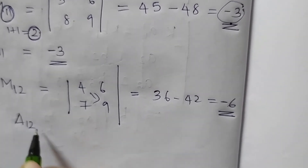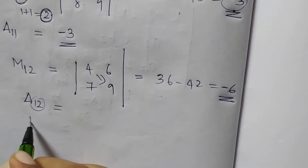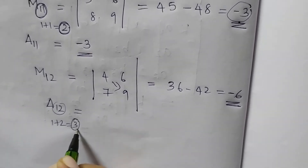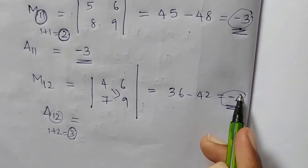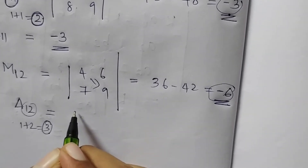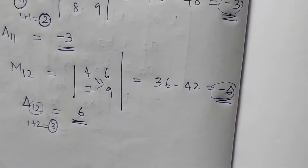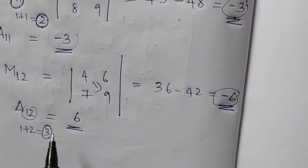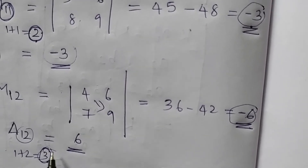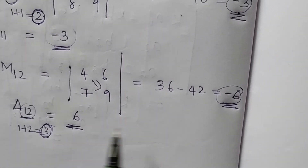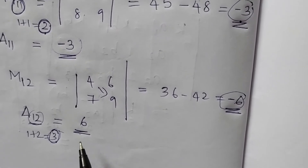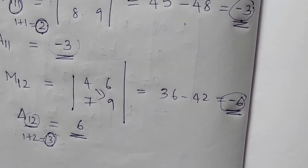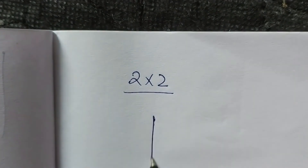The cofactor is related to the minor. The cofactor uses the sign rule: cofactor A11 equals (minus 1) to the power (1 plus 1) times the minor, which is plus the minor. The difference between minor and cofactor is only the sign.